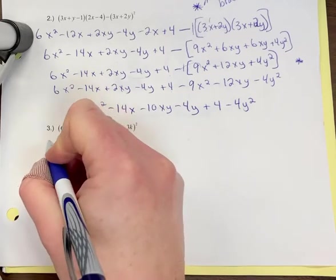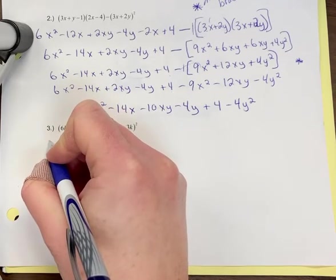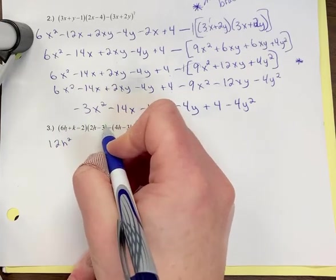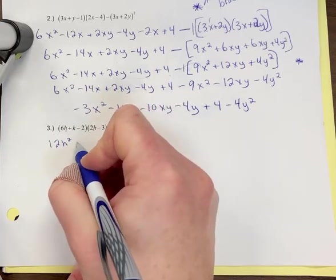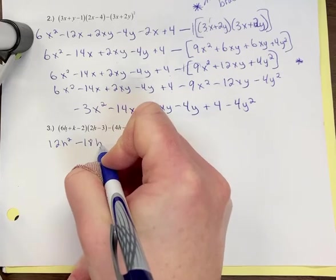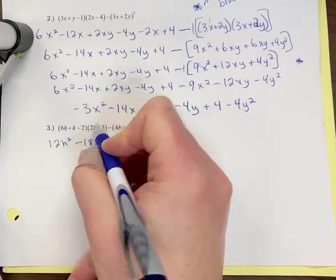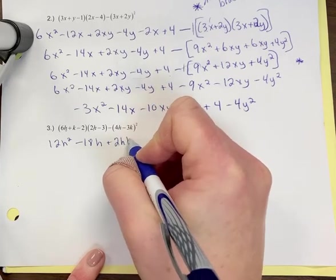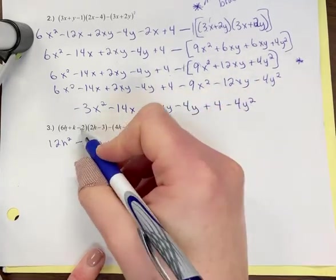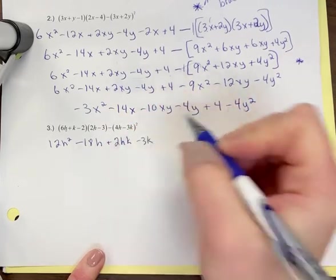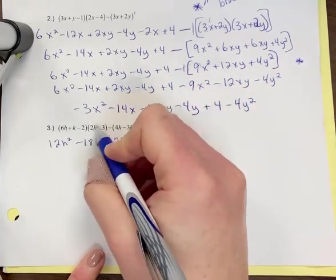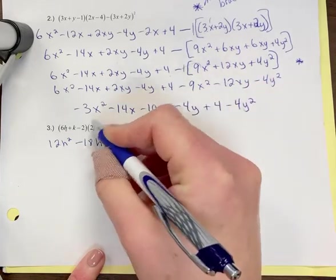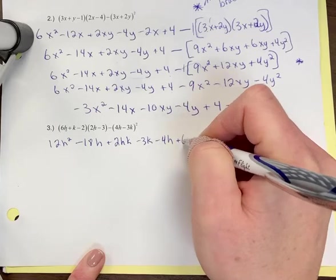6h times 2h, you're going to get 12h squared. Then bringing it through the brackets, 6h times negative three is negative 18h. Now I'm going to bring k through those brackets. k times 2h is plus 2hk. I like to put in alphabetical order. k times negative three is minus 3k. Now I'm going to bring the negative two through the brackets. Negative two times 2h is negative 4h. Negative two times negative three is plus 6.